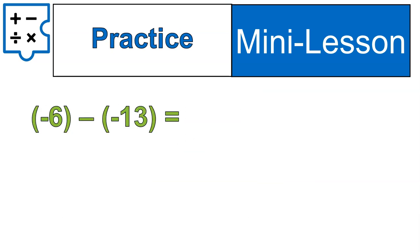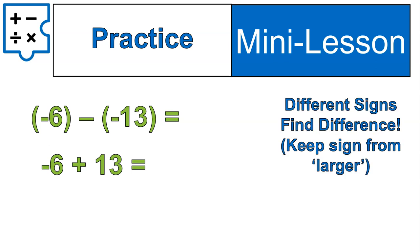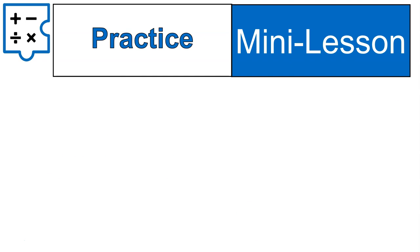Let's do some quick practice. Negative 6 minus negative 13 — write that out in your notebook and try it. Did you write it as negative 6 plus 13? If so, good job. When we have a negative and a positive, we subtract — different signs, find the difference. So 13 minus 6 is 7. And there are 13 positives and 6 negatives, so our final answer is going to be positive 7.